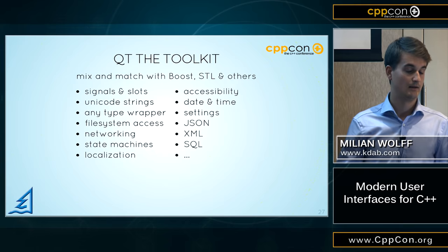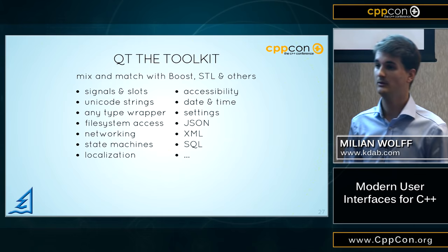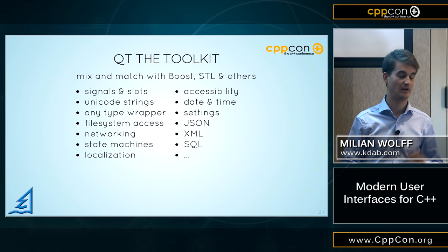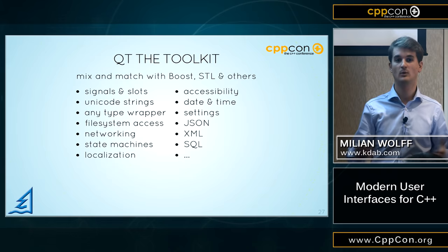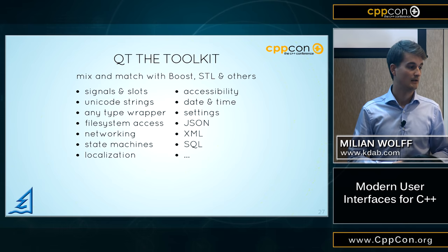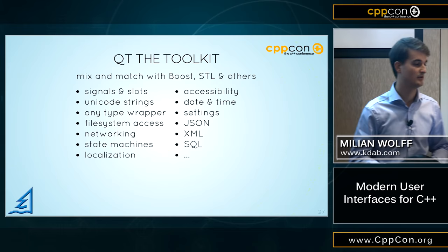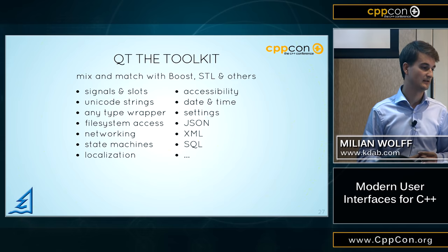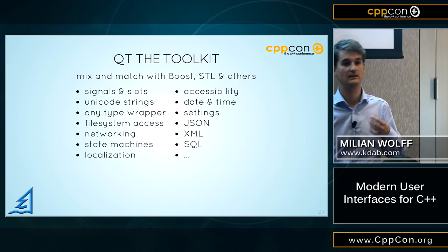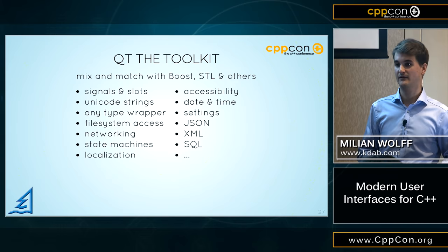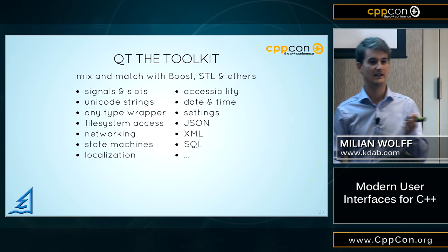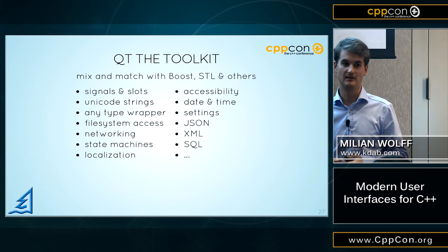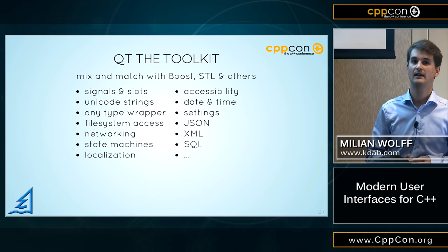Signals and slots in Qt are, in my opinion, really well done. They come with a minimal amount of overhead, if at all, thanks to the code generator. You can add signals and slots later on while keeping binary compatibility. There is an any-type wrapper like Boost.Any called QVariant. You can get file system access similar to what will hopefully be in the STL sooner or later. You get asynchronous I/O, networking, and you can even use state machines — where, by the way, the C++ API for state machines is really, really bad.